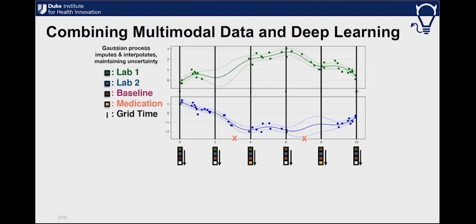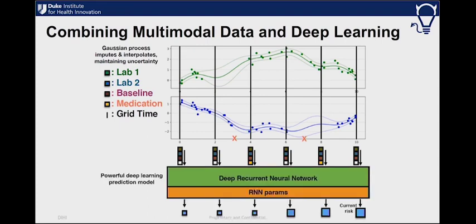One of the things that is true in healthcare outside of trial settings is that you get different pieces of information sampled at different rates. Sometimes a lab is ordered once every three days, other times vital signs are measured every two hours. So we have to impute those continuous functions, then sample them regularly and feed that into the recurrent neural network to generate predictions between zero and one.